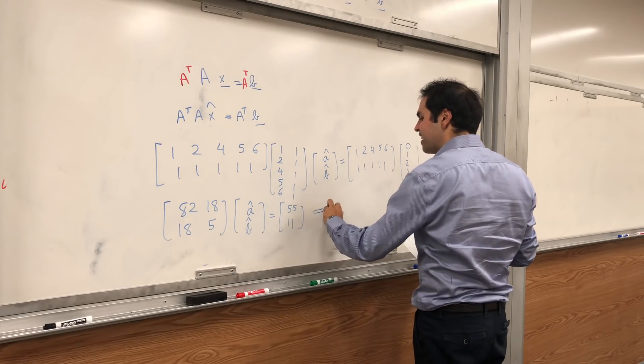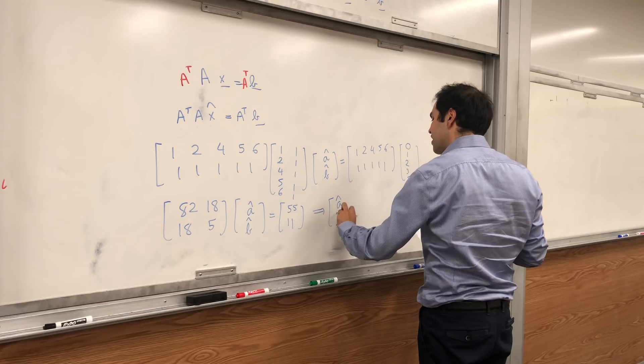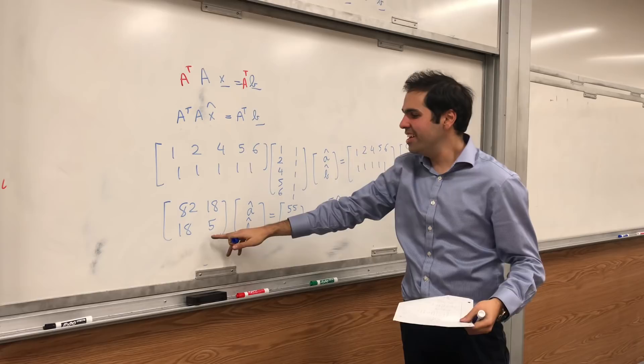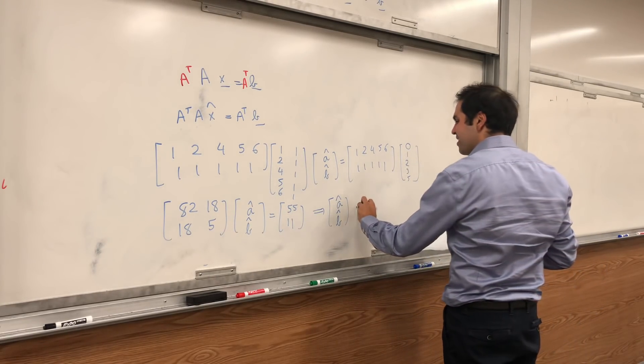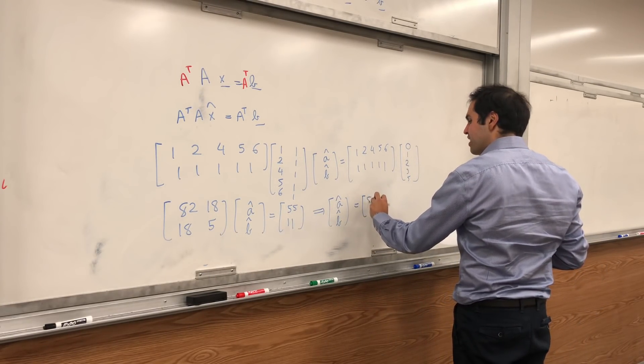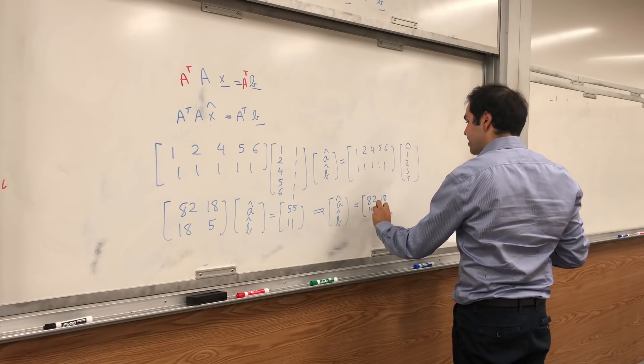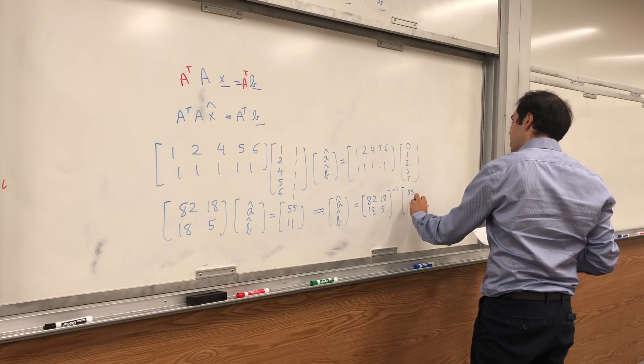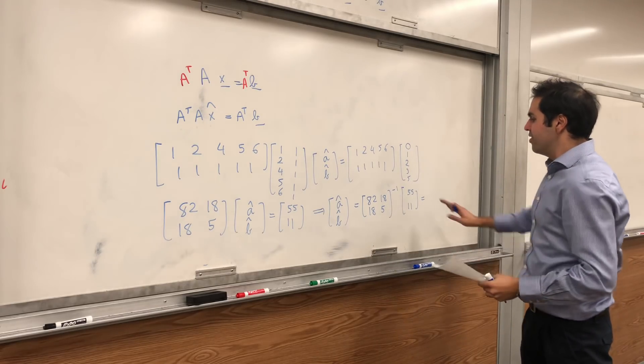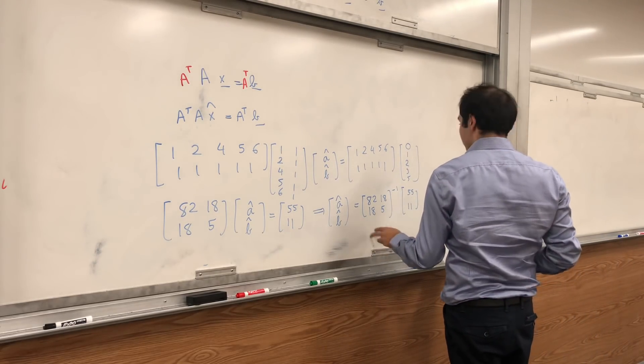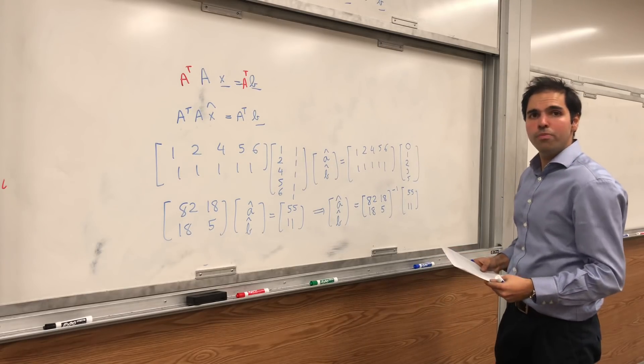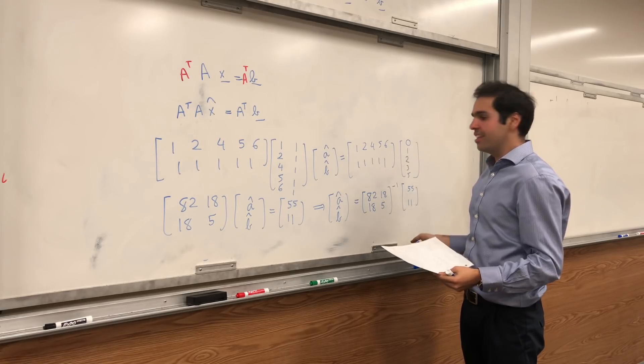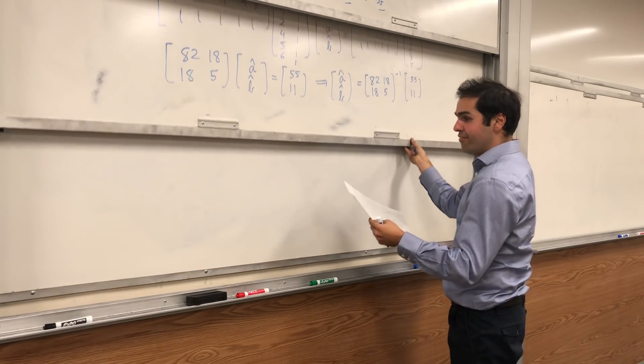And then to calculate A hat and B hat, by the way, notice even though this was a complicated system, it just reduces to a 2 by 2 system here. So A hat and B hat are the inverse of [82,18; 18,5] times [55; 11]. And using the inverse of a 2 by 2 matrix, which you can find as 1 over AD minus BC, you find that in the end, A hat and B hat are simply 77 over 86 and minus 44 over 43.